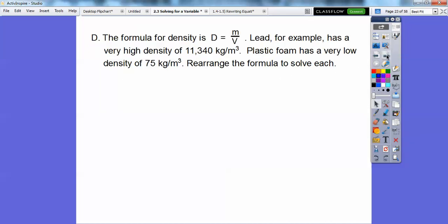Alright, we'll get used to it. So here's one. The formula density is D equals M over V. M represents mass and this represents volume. Lead, for example, has a very high density of 11,340 kilograms per meters cubed. And plastic foam has a very low density, 75 kilograms per meters cubed. So rearrange the formulas to solve for each.